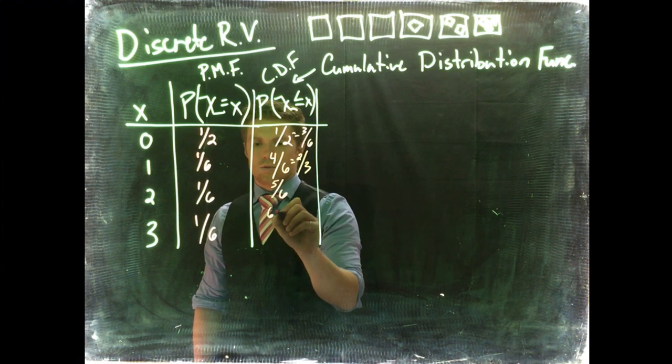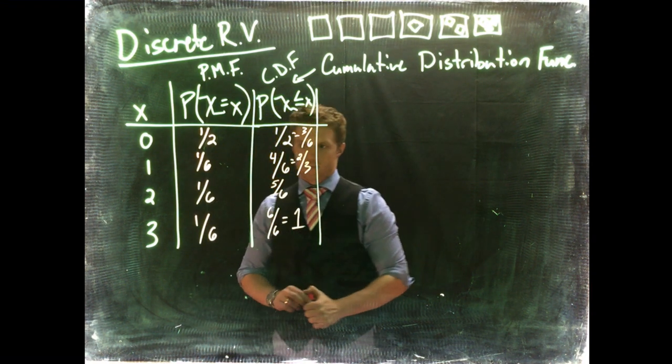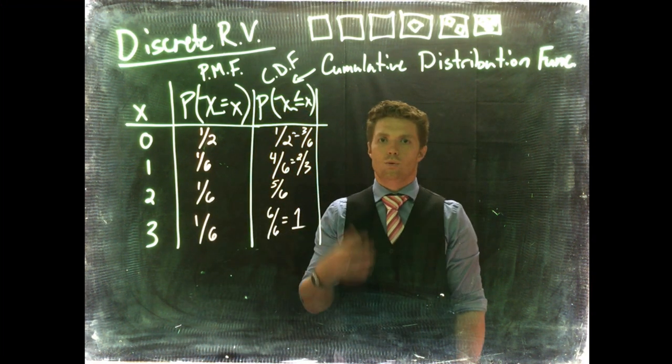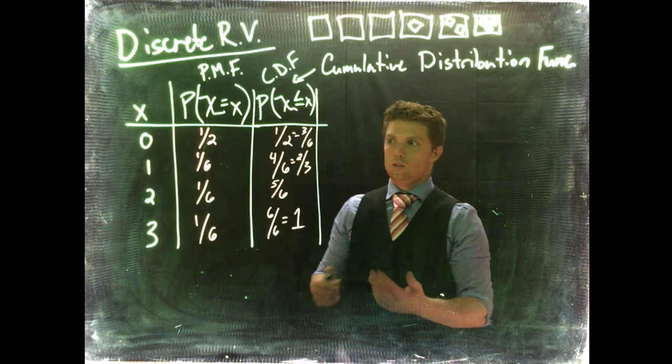And then this last one is going to be six-sixths, which is equal to one. So on our CDF, the last value in your CDF will always equal one. You'll know you've done it right if the last one is one.